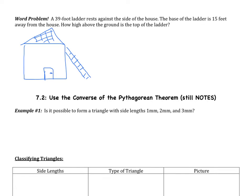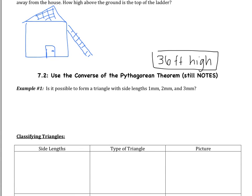You should have gotten that the top of the ladder is 36 feet high. When you come to class tomorrow, I'm going to be making sure that you have all of the work to support the correct answer. So if you got that wrong, or if you didn't do the problem, you need to pause the video right now and fix it.